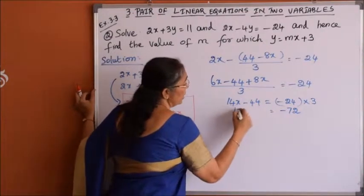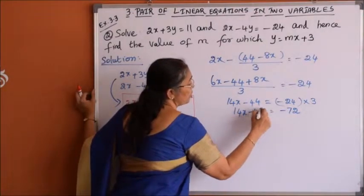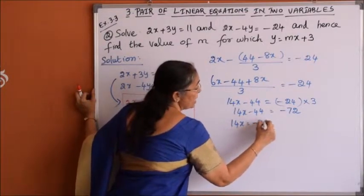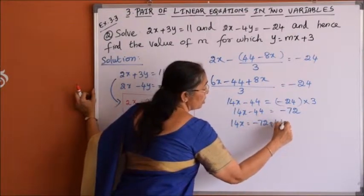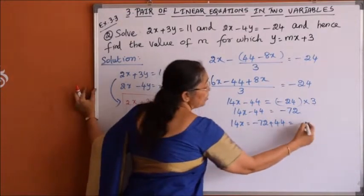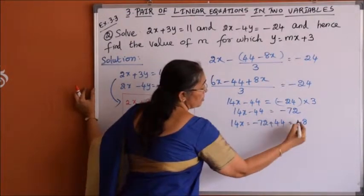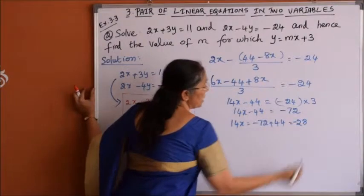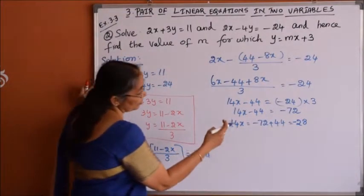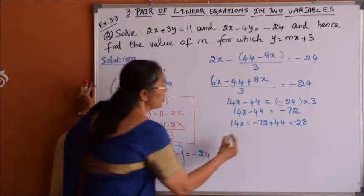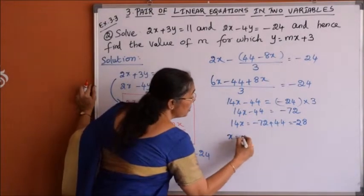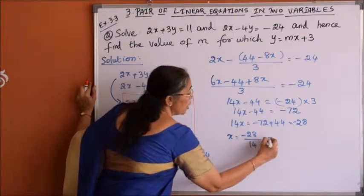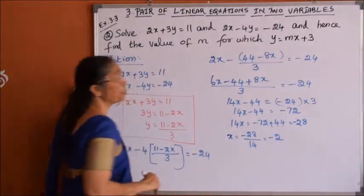So 14x minus 44 equals minus 72. Therefore 14x equals minus 72 plus 44, which gives minus 28. So x equals minus 28 divided by 14, giving x equals minus 2.